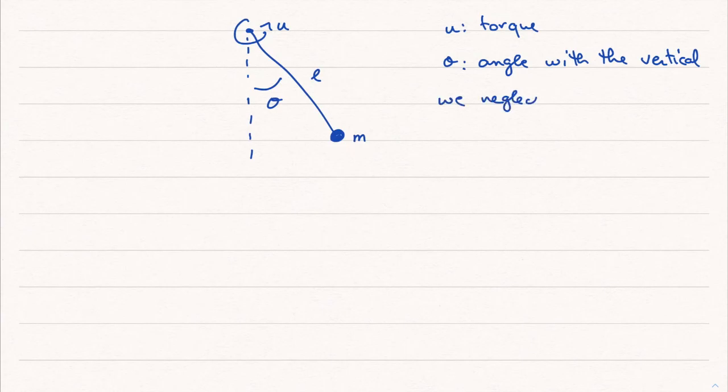So here I will draw the simple pendulum. u is the torque, theta is the angle with the vertical, and we neglect the mass of the tether joining the mass m to the fixed point.